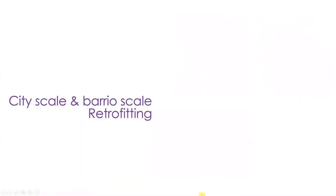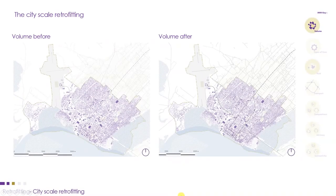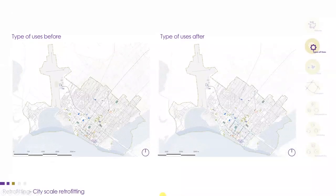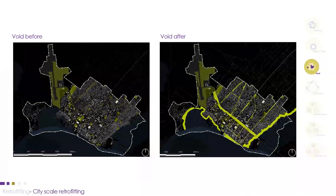Now we look at the city scale and barrier scale retrofitting. At the city scale, it is difficult to see the chain between old and new volumes until we see the barrier scale. Regarding the type-of-uses map, we included additional functions along the city park and the green belt, so it is improved. The before-and-after void map shows we have integrated more void area across the city park and the green belt, so it has been improved.